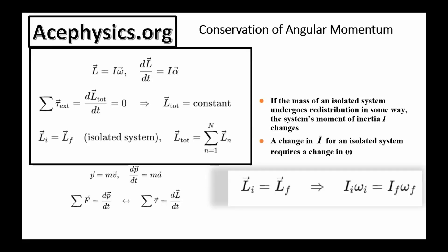Before moving on to the example problems, I want to discuss conservation of angular momentum. Angular momentum equals I times omega, and the time derivative of angular momentum equals I times alpha, which equals the net torque. What this tells us is: if you have an isolated system where the net torque is zero, the angular momentum must always be the same. The angular momentum before a collision or redistribution of mass equals the angular momentum after.